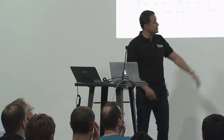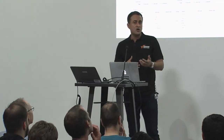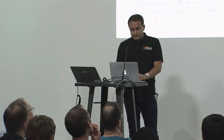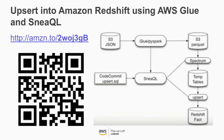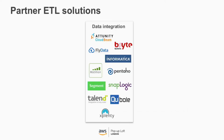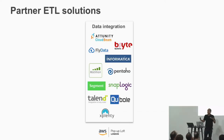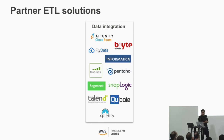We recently published a blog on managing upserts into Redshift using AWS Glue and Presto/Spark, which is an open-source SQL engine — definitely take a look at that. We also have a very vibrant partner ecosystem with lots of ETL tools like Informatica, SnapLogic, and Matillion. If you're already using one of those, you may want to continue using it as well.